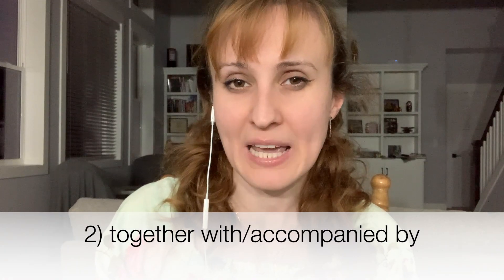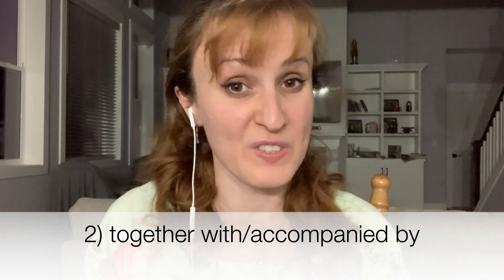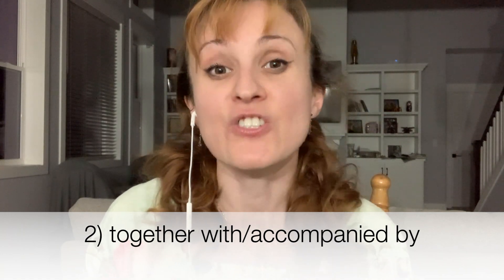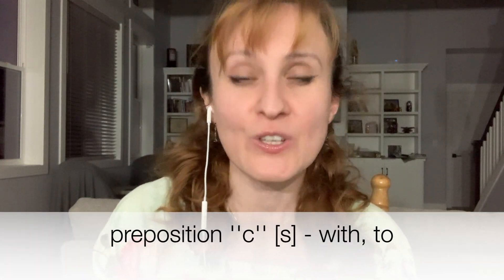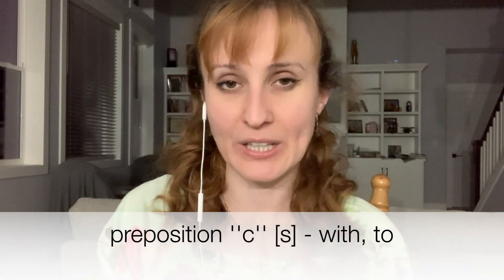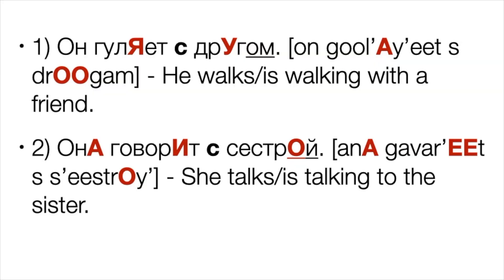The second meaning of this case is to do something together with somebody or something. The key words here are 'together with' or 'accompanied by.' Such nouns go after the preposition С in Russian. Number one: Он гуляет с другом — He walks with a friend. The word другом goes after С in the instrumental case and has the instrumental ending -ом. Number two: Она говорит с сестрой — She talks to the sister. The word сестрой has the instrumental ending -ой.